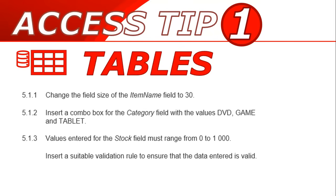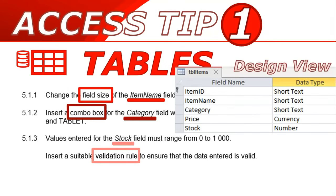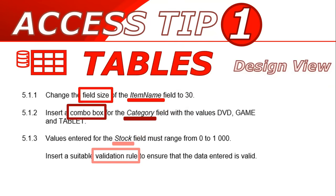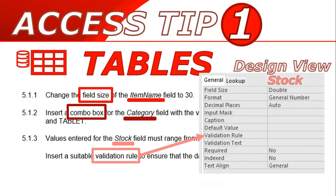When they give you questions in tables, they tend to mention particular types of fields like item name, category, or stock, and they ask you to change particular properties or attributes for that field. Make sure that you go to the correct field, and when you are on that field, then you can change that particular property. For example, if we want to change item name, we go to item name and change the field size. And for stock, we want to change the validation rule just for stock.